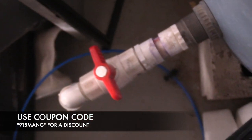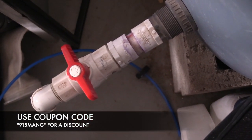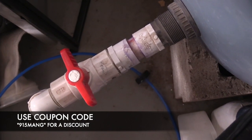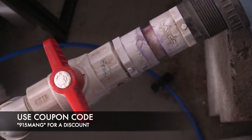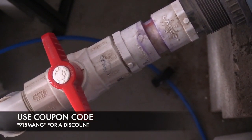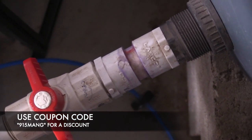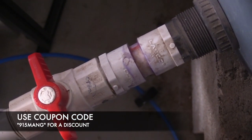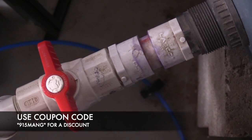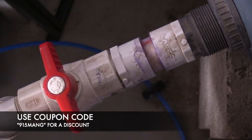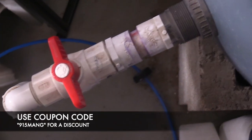As far as the Brute container, I'm using a schedule 80 bulkhead. You can use something else, but I suggest schedule 80 because it's heavy duty. I did it like this and I haven't had any problems. So if you guys have any questions, hit me up in the comments below. Make sure you guys like and subscribe and don't forget to use that coupon. Thanks guys and have a good one.